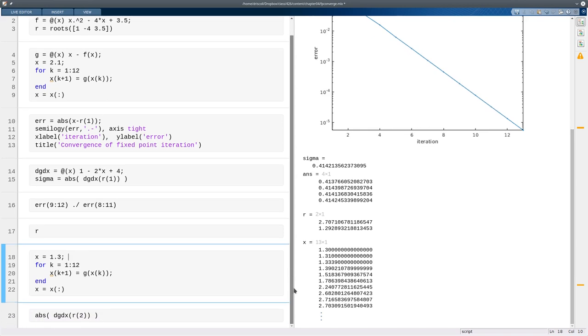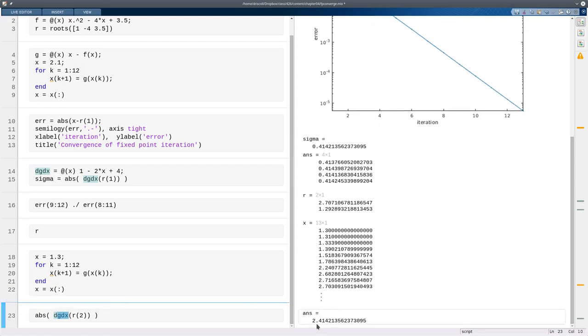And again, this is not very mysterious. It's just because when we evaluate the derivative of g at this fixed point, we find that in magnitude it's greater than 1, and so there can be no convergence for the fixed point iteration.